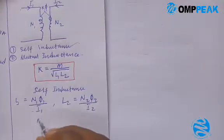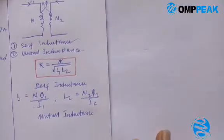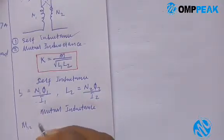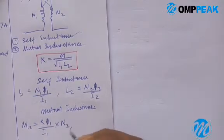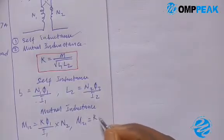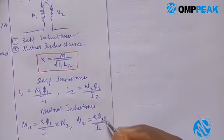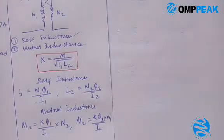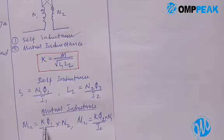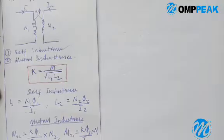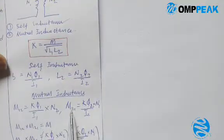Now let's write out for mutual inductance also. For mutual inductance we have M12 equal to k·φ1 over i1 times N2, then M21 equal to k·φ2 over i2 times N1. Don't forget — this is mutual inductance.